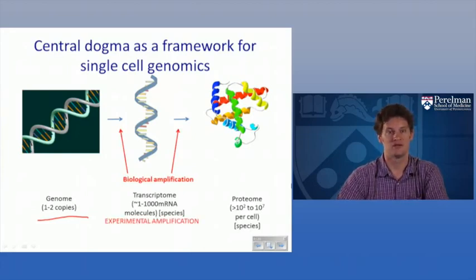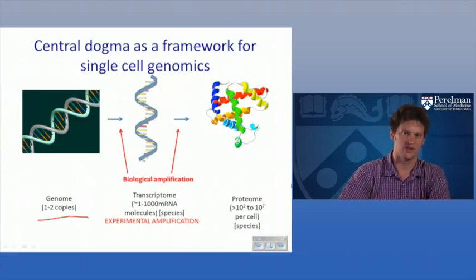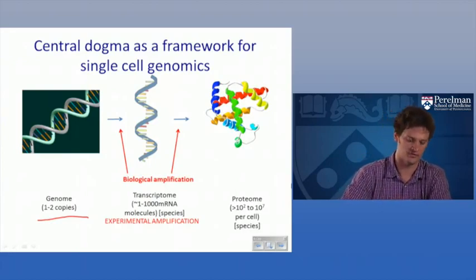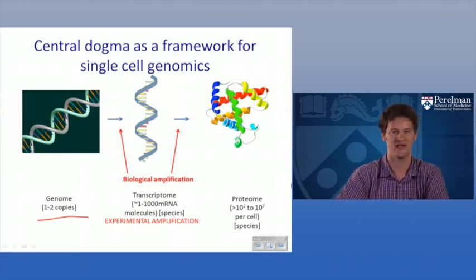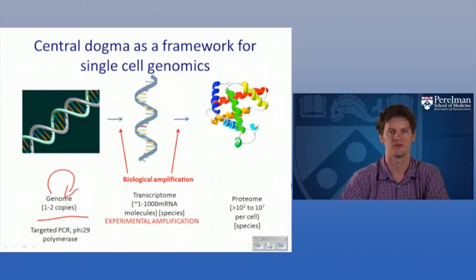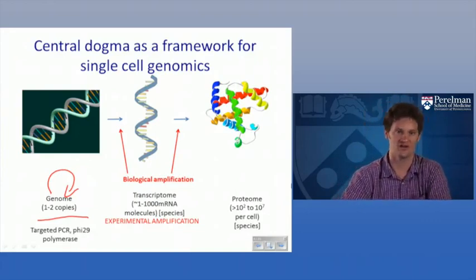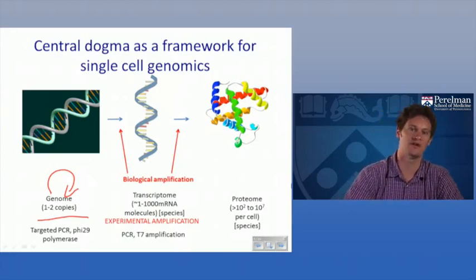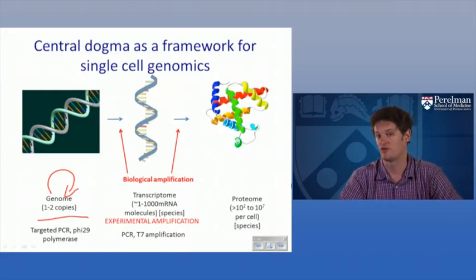We can take advantage of the same approaches cells use to experimentally amplify biomolecules. For the genome — even though there are only one or two copies per cell — you can use DNA polymerases or PCR for either targeted amplification of particular genomic regions or whole genome amplification to increase copy number. A cell can also divide to make millions of cells over several rounds of division by copying its genome with polymerases. For the transcriptome, with one to a thousand mRNA copies, you can convert those back to cDNAs and use the same PCR or DNA polymerase-based methods.